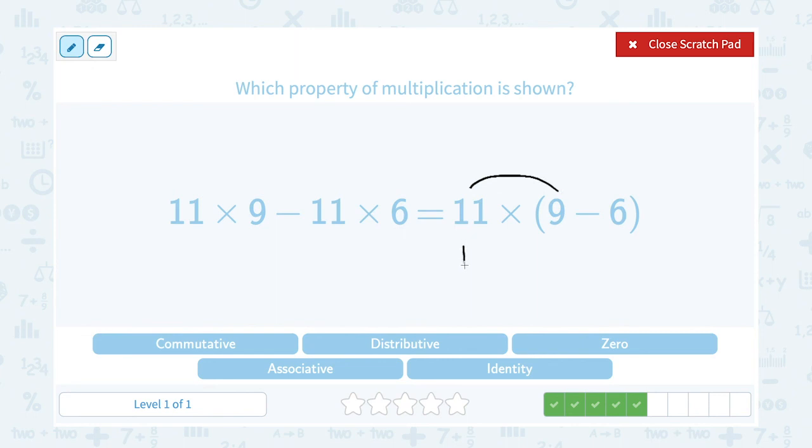So I would say 11 times 9. This time our sign is a minus, so I would say minus 11 times 6. So just like the last question, this is another example of distributive property.